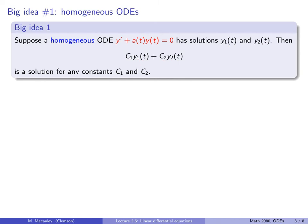Let's prove this — not formally, but let's give an idea as to why it's true. The word proof is often intimidating, so let's call this a verification. How do you check that this is true? Well, just do it: take this linear combination and plug it back into our differential equation.